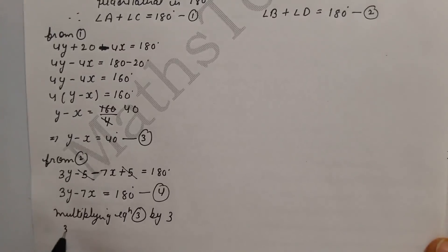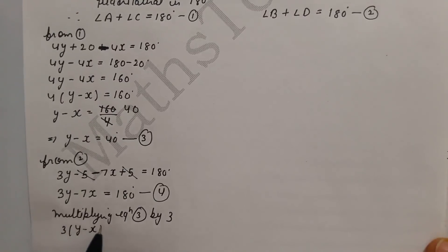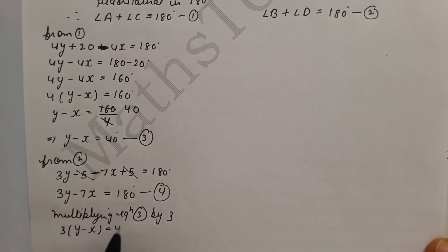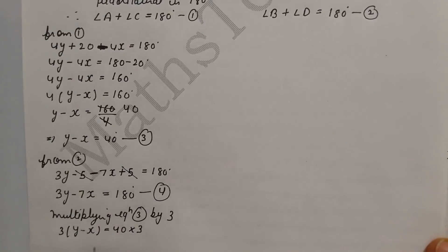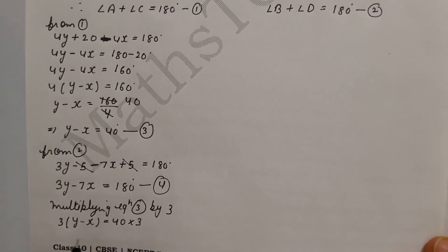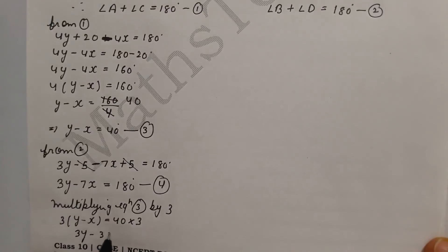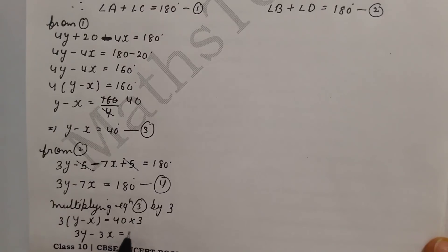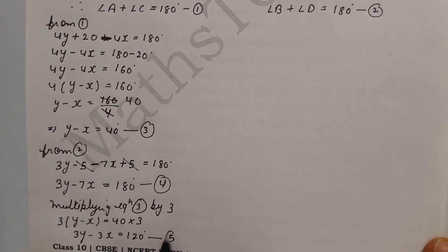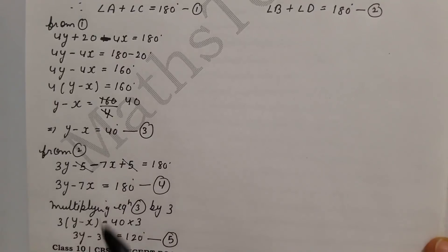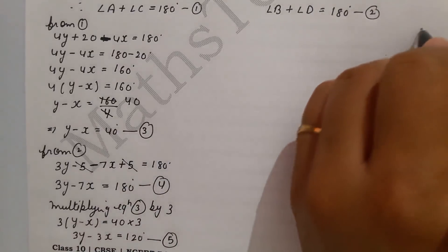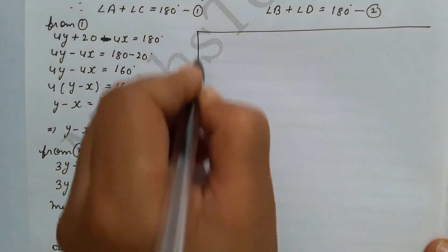Multiplying equation 3 by 3 on both sides to keep balance: 3 times (y minus x) equals 40 times 3. This gives us 3y minus 3x equals 120°. This is equation 5.